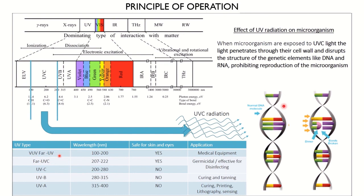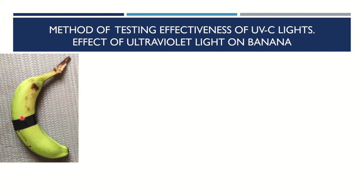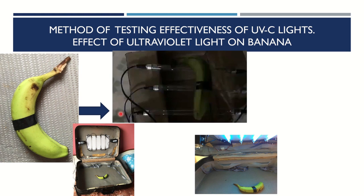There is a link in the description with detailed information about the principle of operation which you can go and check. We will now look into the method of testing the effectiveness of UVC light by observing the effect of ultraviolet radiation on a banana. This will help us understand how to calibrate whether the UV light we are using is effective or genuine. I have taken a banana and put a black electrical tape on part of it — the kind you can find at any electrical shop — then exposed it to ultraviolet radiation inside the box we will be making.